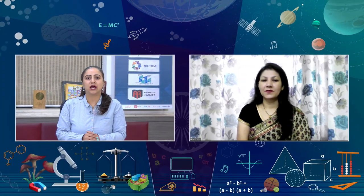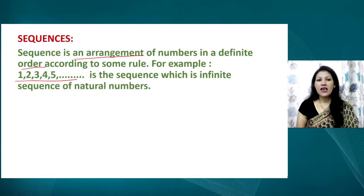Namaskar Tanvi, and Namaskar to all our viewers. Ma'am teaches at Gita Niketan, Avas Vidyalay, Kurukshetra. Let's recap Arithmetic Progressions. A sequence is simply an arrangement of numbers in a definite order. For example, writing all natural numbers 1, 2, 3, 4, 5 and so on is a sequence, and it is an infinite sequence because it continues endlessly.